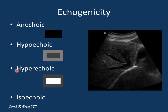On the other hand, the tissue is hyperechoic when the tissue appears brighter as compared to the surrounding tissues, which means it has a lot more echoes than the surrounding tissues. It is called isoechoic when the echogenicity of the tissue is similar to the surrounding tissues.